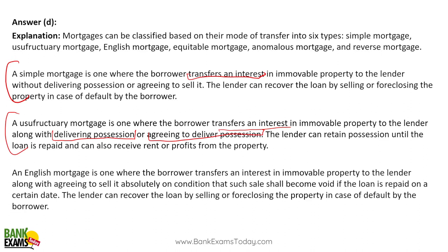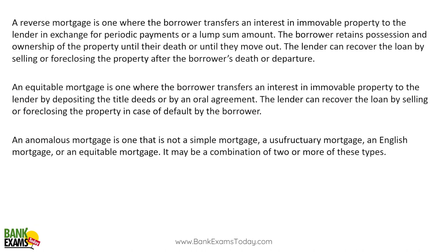In an English mortgage, the borrower transfers an interest in immovable property to the lender, plus there is an agreement to sell it absolutely on condition that such sale shall become void if the loan is repaid. So if the loan is not repaid, the lender will sell off the asset.